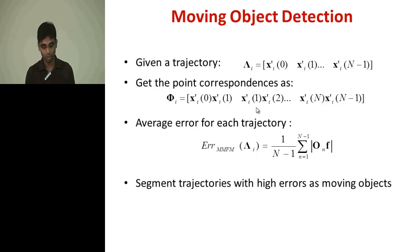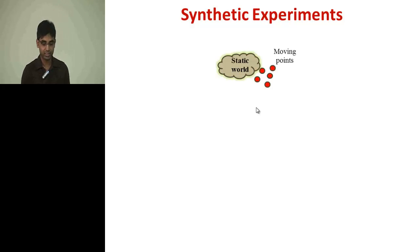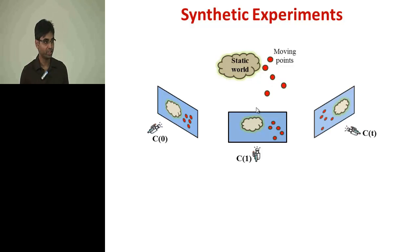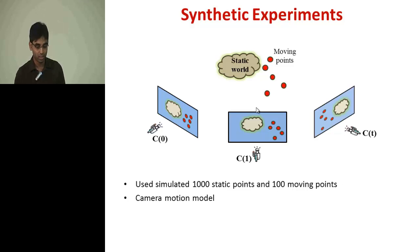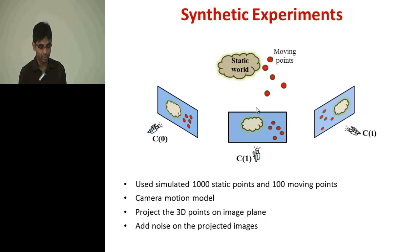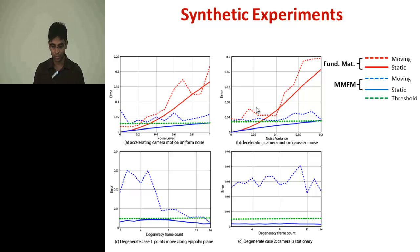We performed synthetic experiments to evaluate the efficiency of our algorithm. We started with synthetic static and moving points in 3D space and projected them at different camera locations. We used 1000 static points and 100 moving points. We used a camera motion model to move the camera, projected the static and moving points onto the image planes, added noise to make the experiment realistic, and then applied our algorithm to find the moving objects.